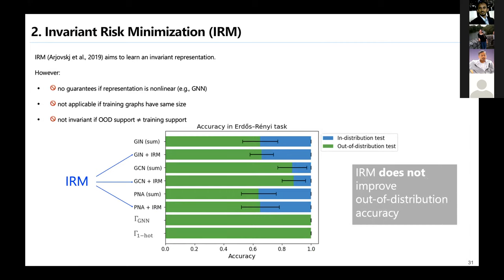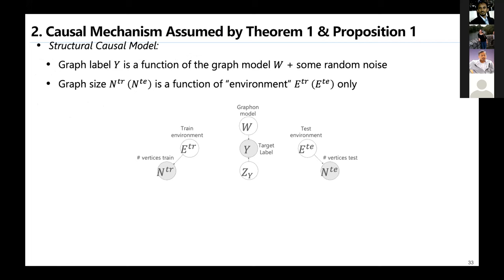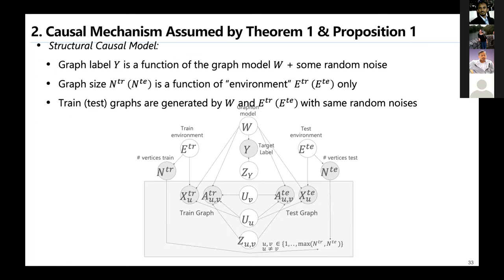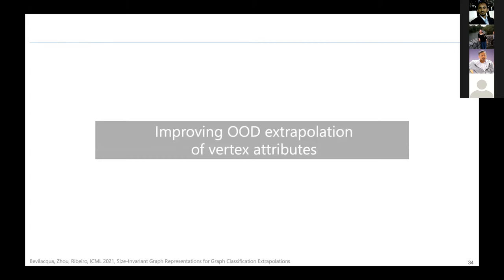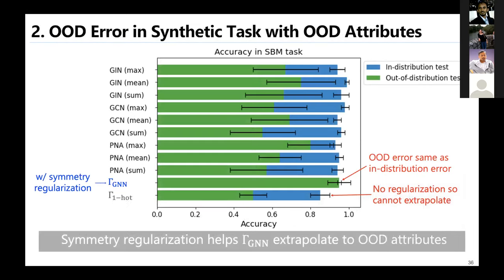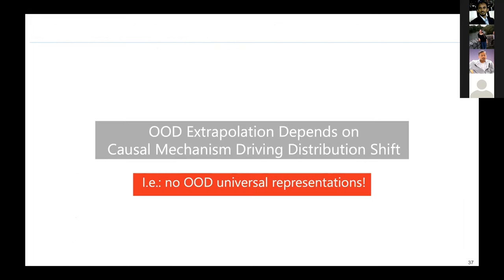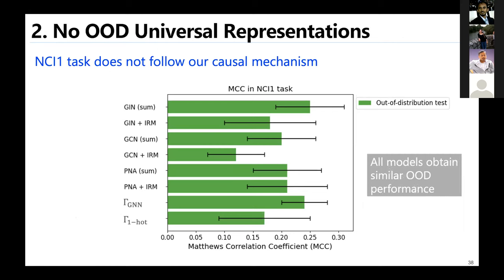You really need the causal model — how graphs actually grow — to be able to do this. There is also something about using vertex attributes, since GNNs can handle that, and you can also extrapolate even if the graph has node attributes or edge attributes. One caveat: this representation is not universal. If a graph has a different mechanism for growing than the graphon mechanism, you need a specific mechanism designed for that task. Our representation won't do well in that case because it's not invariant for all kinds of graphs. You need to understand how your specific graph works.